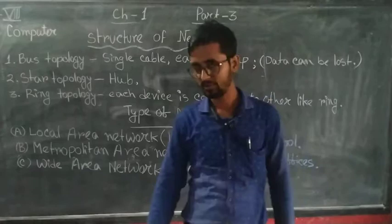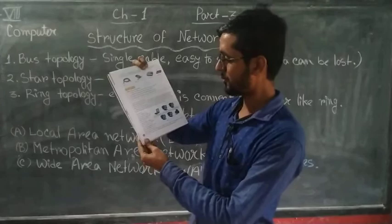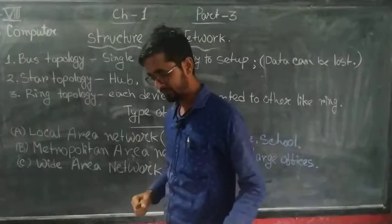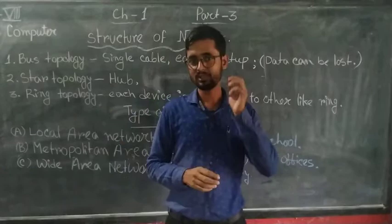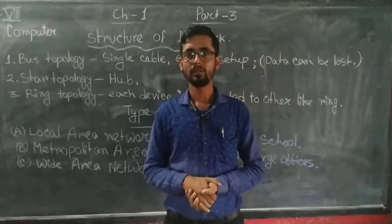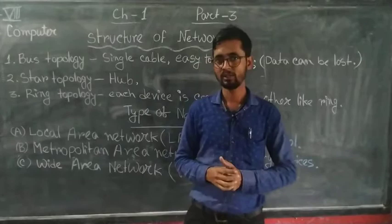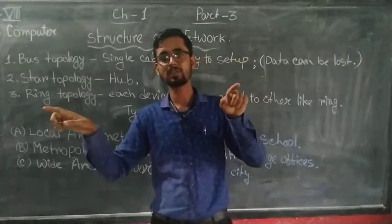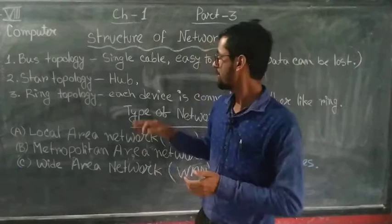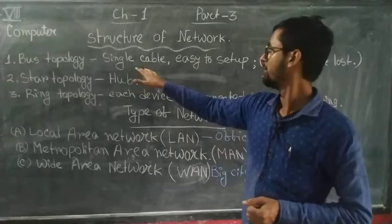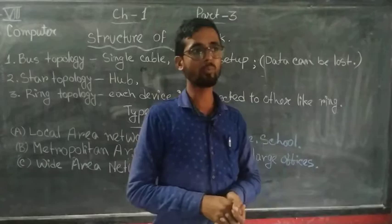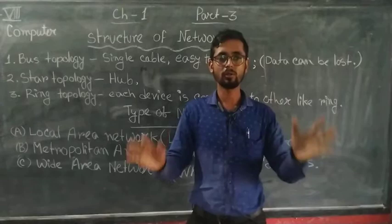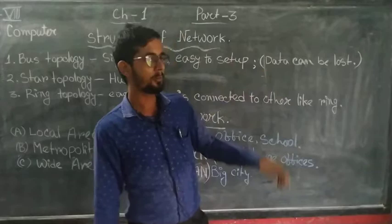Number 1 is bus topology, number 2 is star topology, and number 3 is ring topology. If you go through your book, you can see page number 6 — bus topology. In a bus topology network, there can be many computers — like 100, 200, or more. These computers are all connected to a single cable. There will be one single cable, which we call the bus, and all computers will be connected to it. Bus topology is very easy to set up, whether in a building, a school, or any office — the installation is very easy.